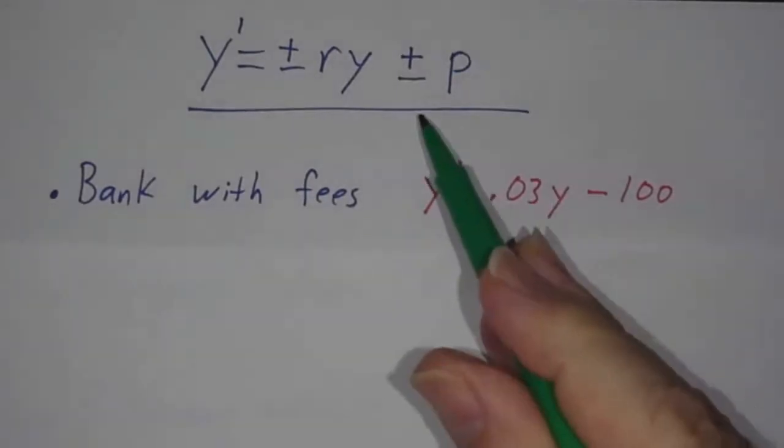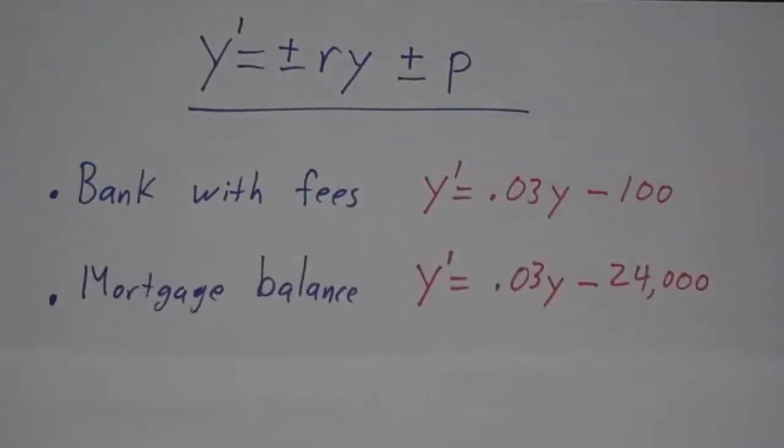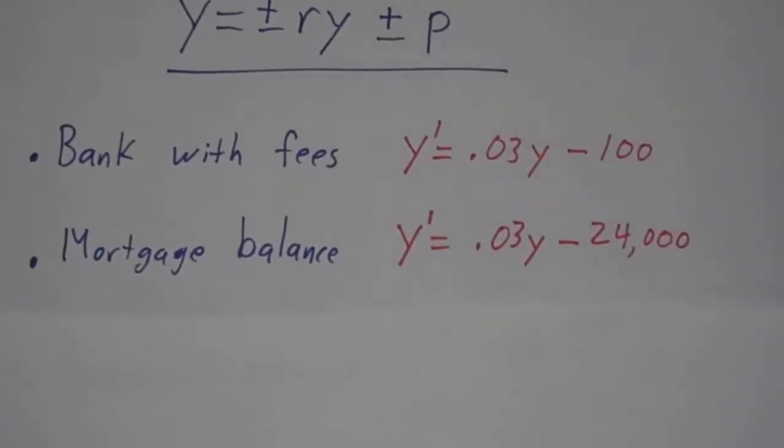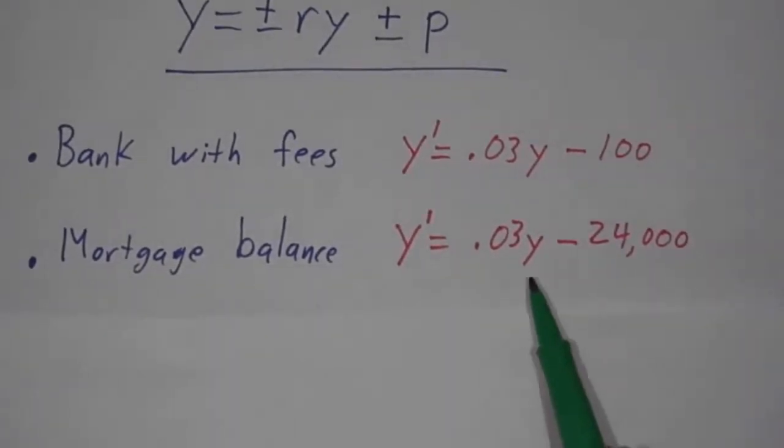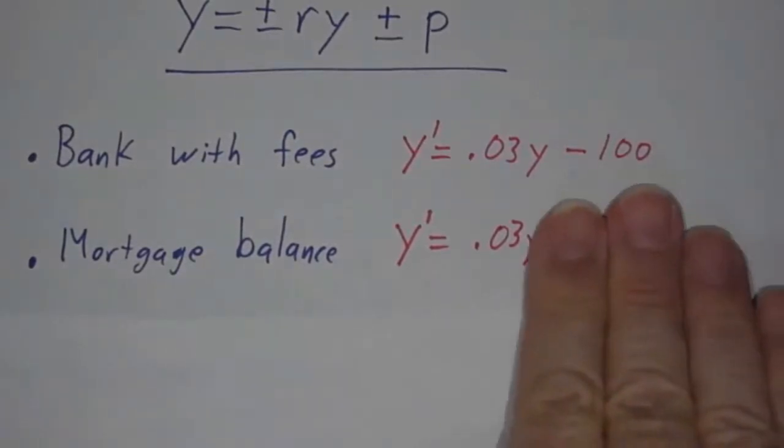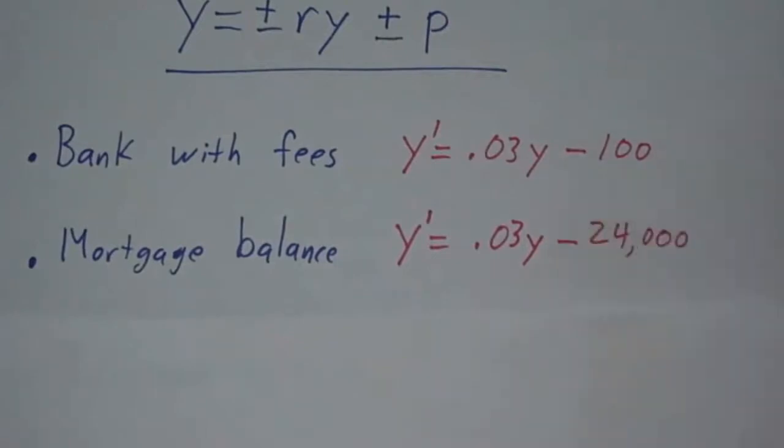Or maybe you have a mortgage at 3%, and the amount you owe, if you didn't pay it off, would grow at 3% per year. That would be exponential growth. But you're paying $2,000 a month in mortgage, so you're paying $24,000 a year to reduce that balance. It's going up because of interest and down because of your payments. Same equation.